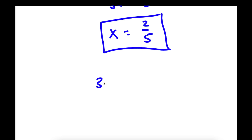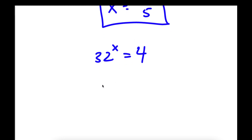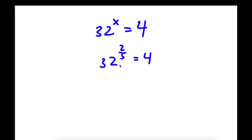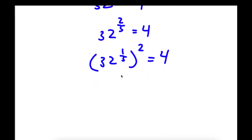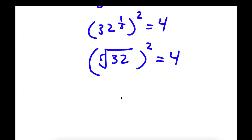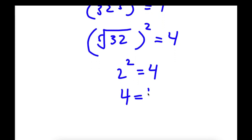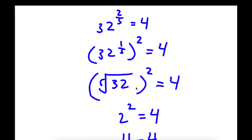Now we can go ahead and plug this into our original equation 32 to the power of x equals 4 and see if it's right. So if I plug in x as 2 over 5, I get 32 to the power of 2 over 5 is equal to 4. Now 32 to the power of 2 over 5 is the same thing as 32 to the power of 1 over 5, squared. Now 32 to the power of 1 over 5 is the same thing as the fifth root of 32, squared. The fifth root of 32 is simply 2, so I have 2 squared. 2 squared is equal to 4, so I have 4 is equal to 4. Because this is true, we know our solution is correct.